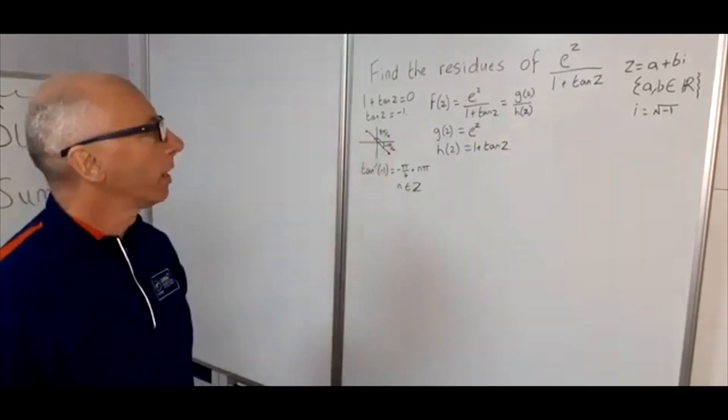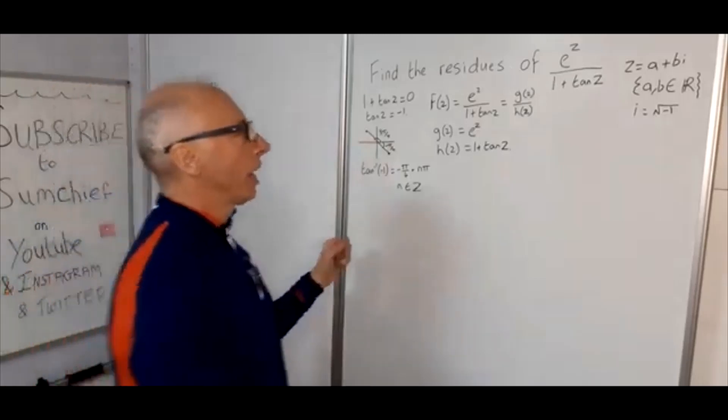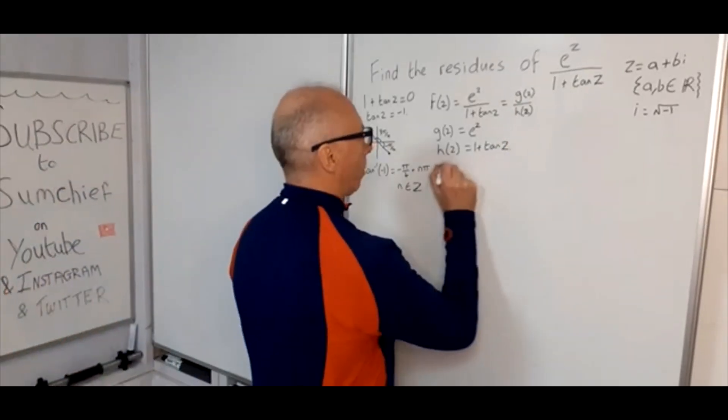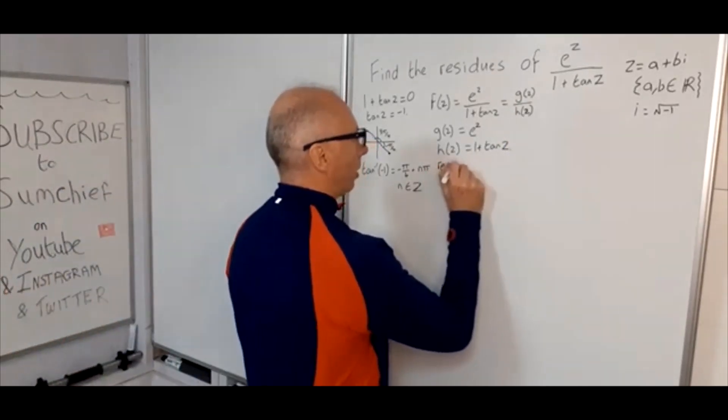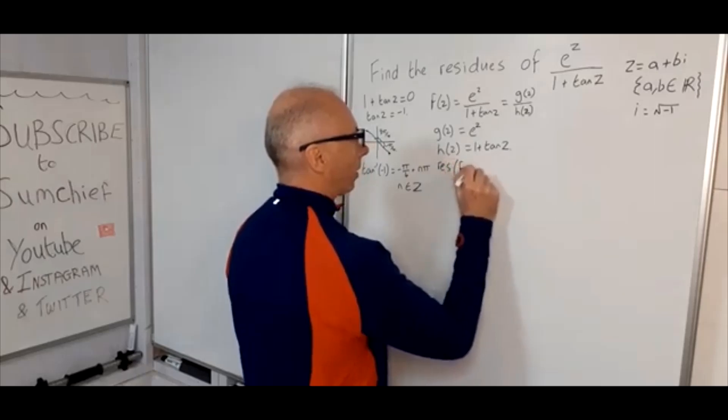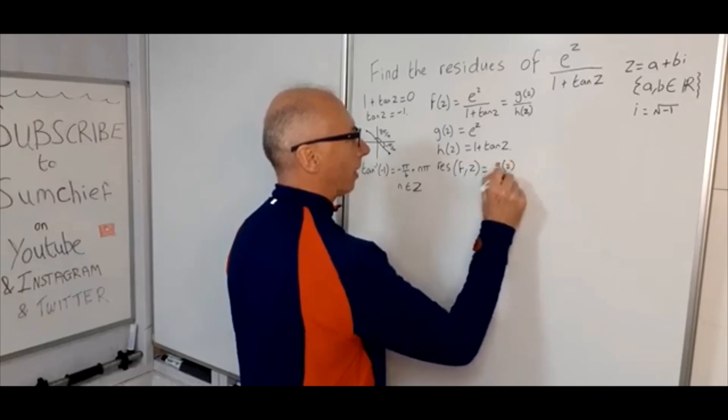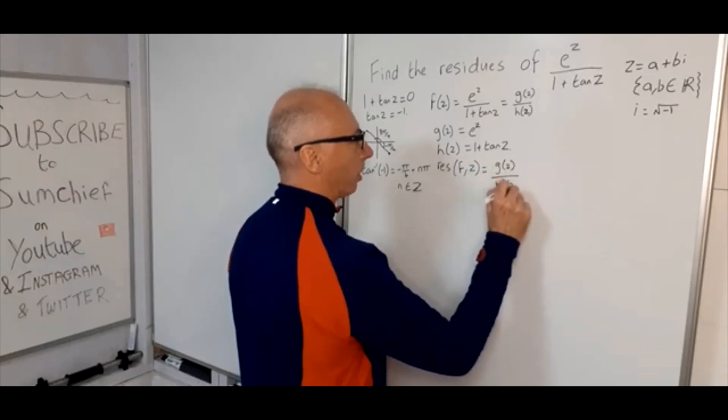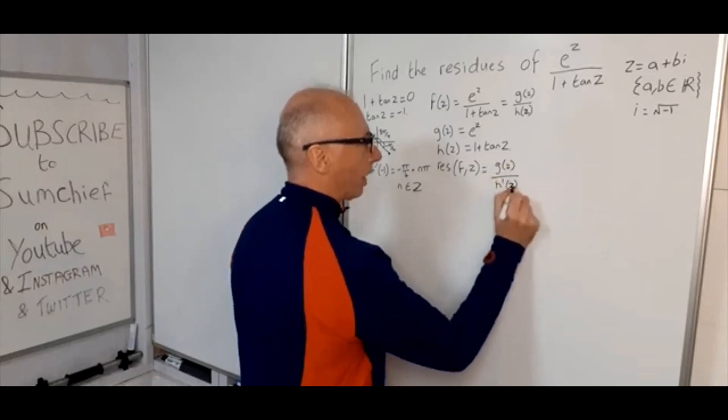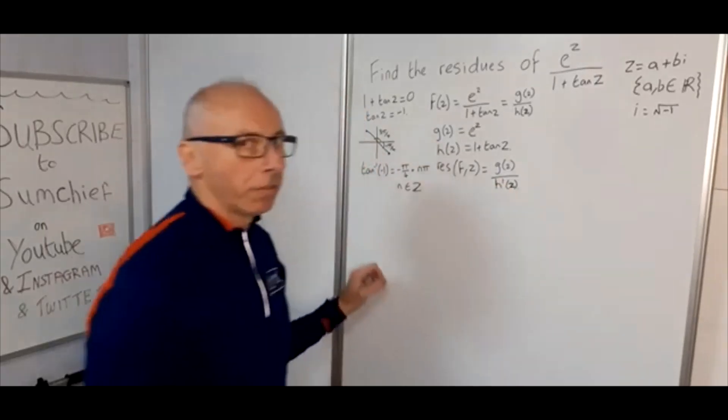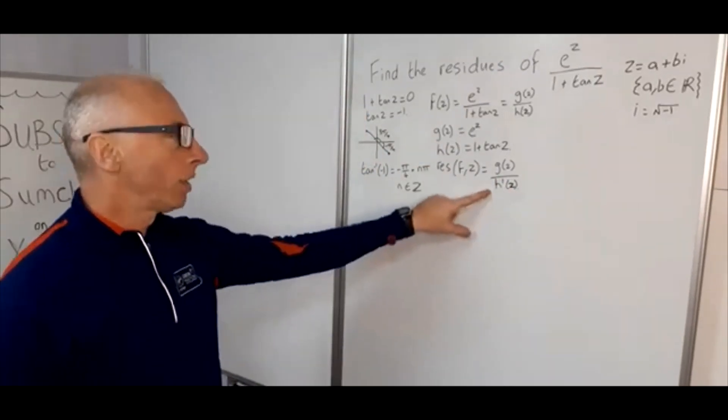Okay, so now we can find our residue. So the residue of f at a point z equals g(z) over h prime of z. So that's using the derivative rule for finding residues.